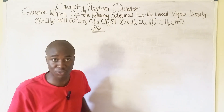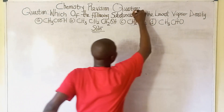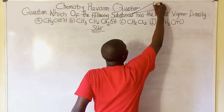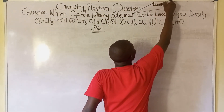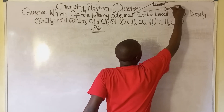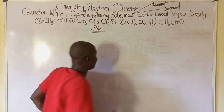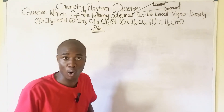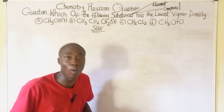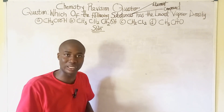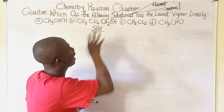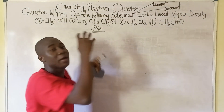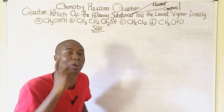To solve questions like this is very easy. First of all, you can see the word 'substances' — a substance can be either an element or a compound. In the look of things, all the options written on the board are compounds, because they are made up of two or more elements. They are asking us to find the particular compound with the lowest vapor density.